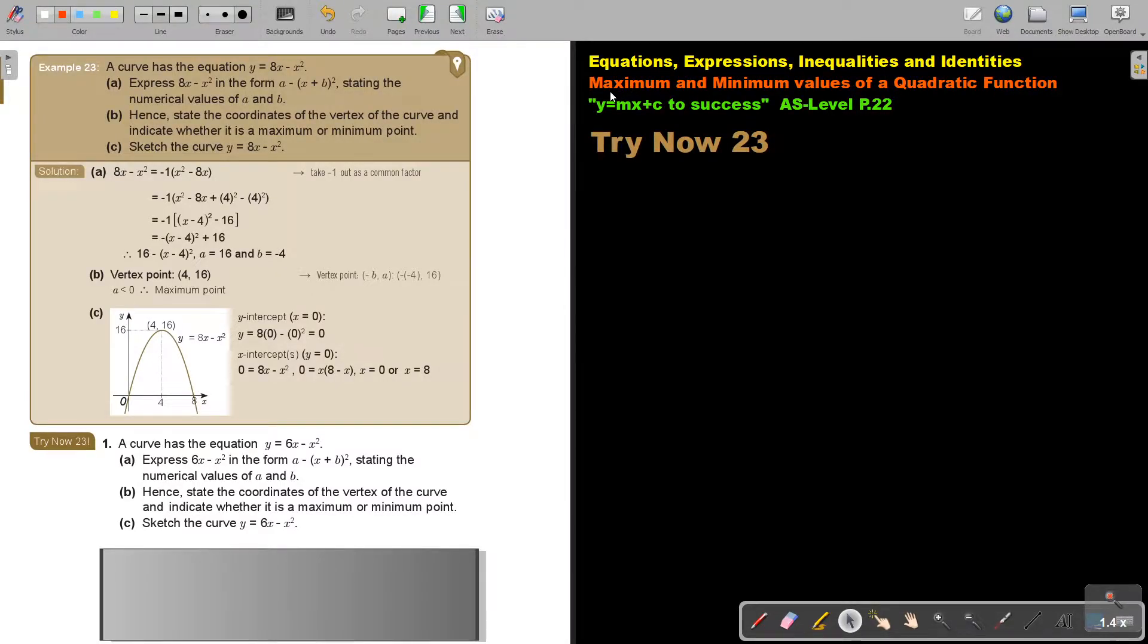In this video, we will continue with maximum and minimum values of a quadratic function. You will find this on page 22 in the Namibia AS level mathematics textbook Y equals MX plus C to success.